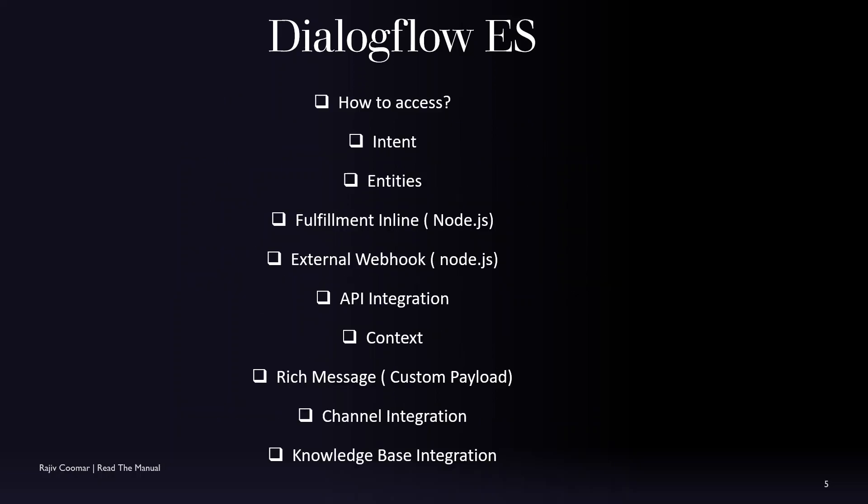The topics we are going to cover include: how to access intents and entities; fulfillment using inline Node.js — other SDKs like Java and Python are also available; external webhooks, for when you want to deploy your fulfillment to another cloud platform such as AWS, Microsoft Azure, Heroku, or Oracle; how to integrate with APIs and web service calls; how to handle context between intents; and how to use rich messages such as lists, buttons, and suggestion chips.